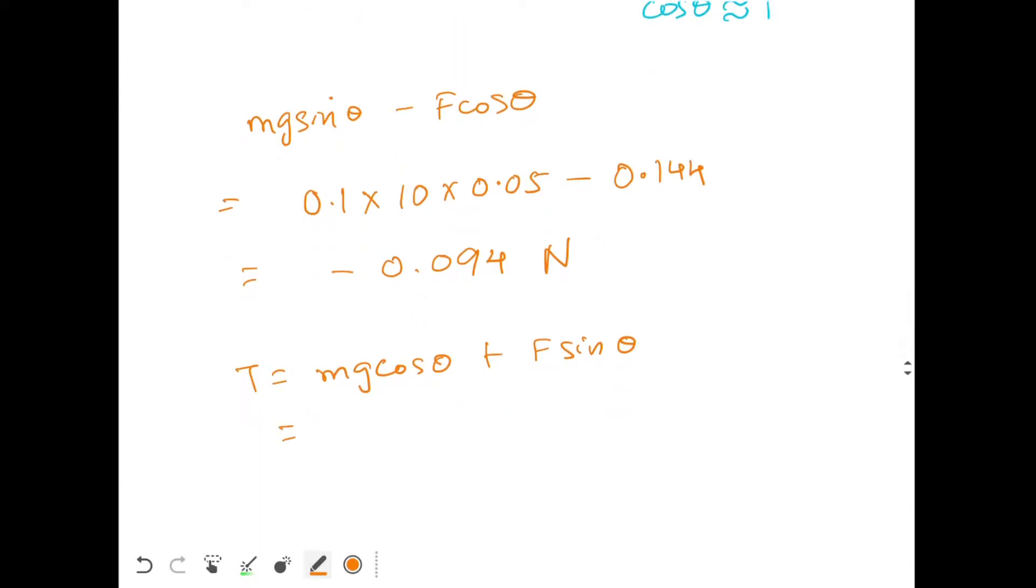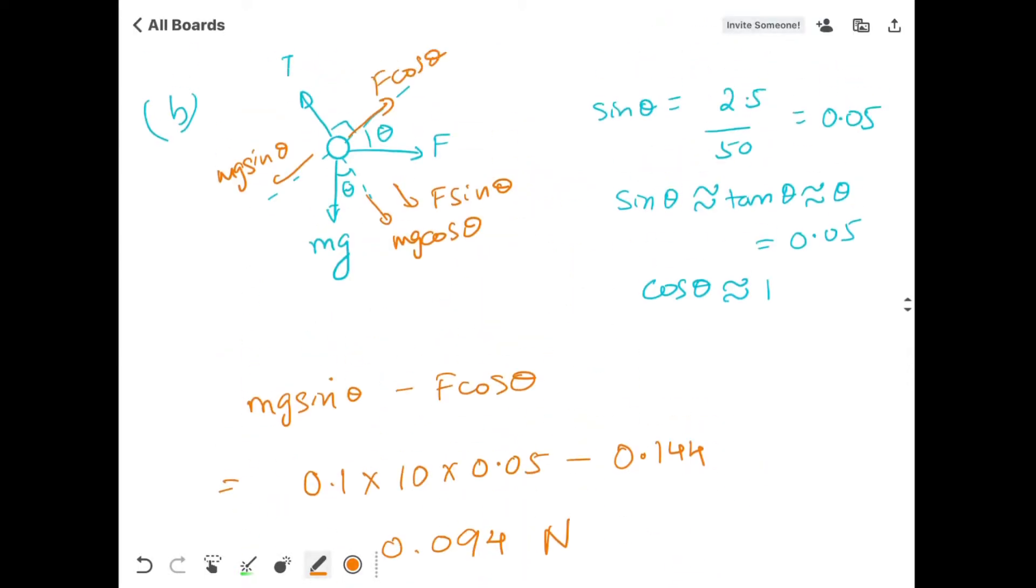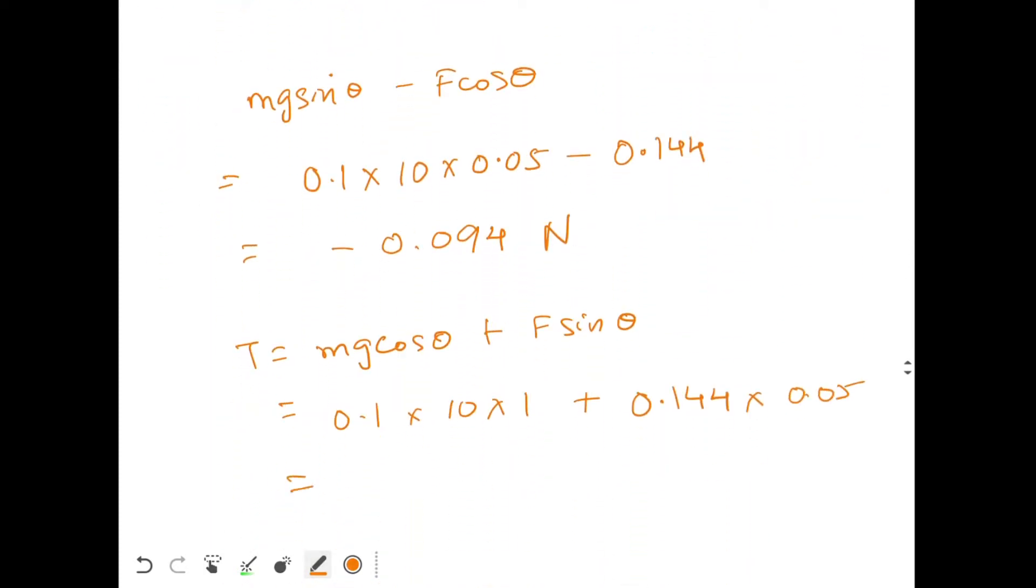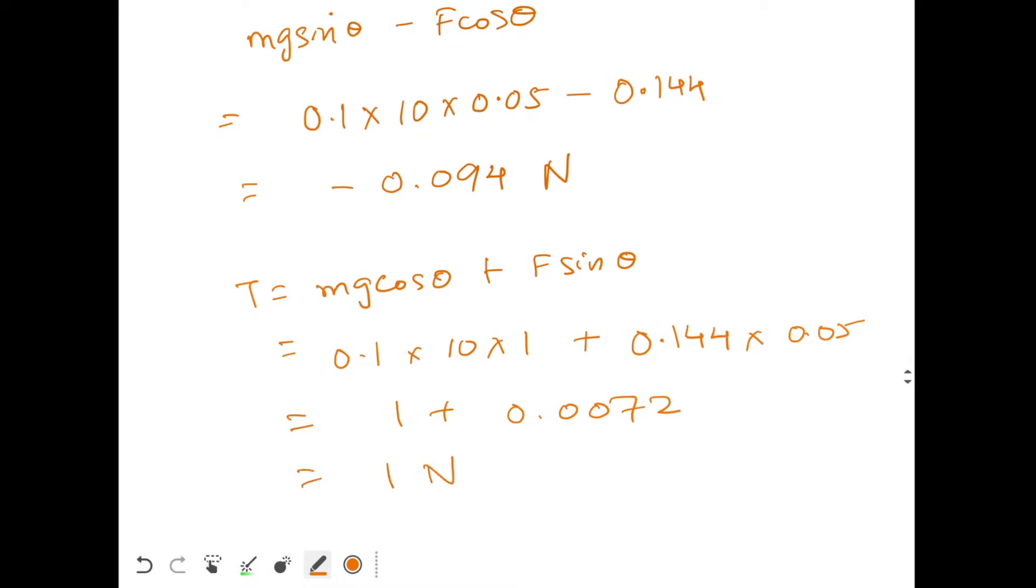Put the values. M is 0.1 kilogram, G is 10, cos theta is 1 plus F is 0.144, sin theta is 0.05. So when you simplify this, this will come out to be 1 plus 0.0072. So this is approximately equal to 1 N only. We can ignore this tiny term. I took G equal to 10 meter per second square and that's why I am getting 1 N. If you take G equal to 9.8 meter per second square then tension will come out to be 0.98 N.